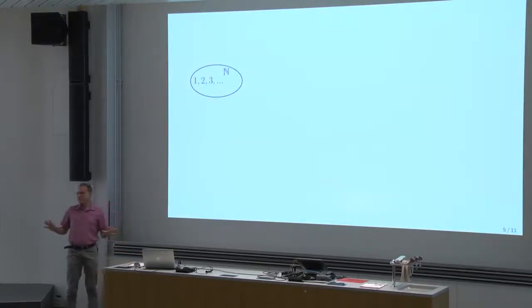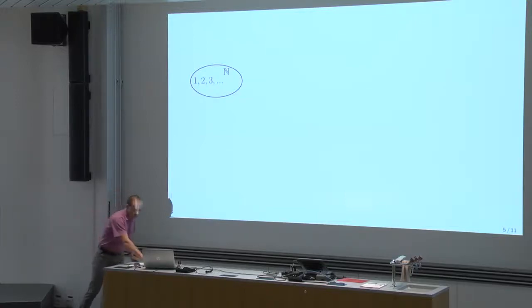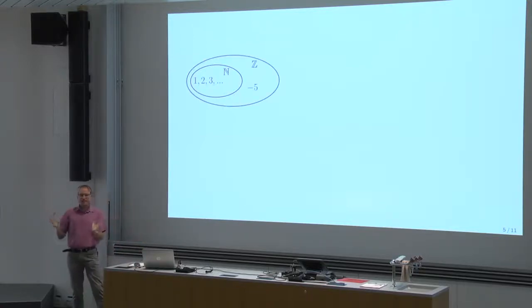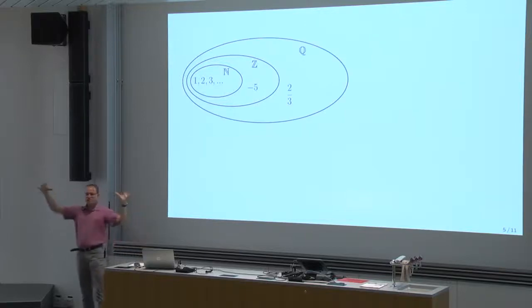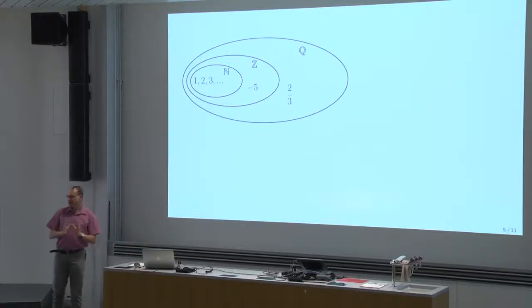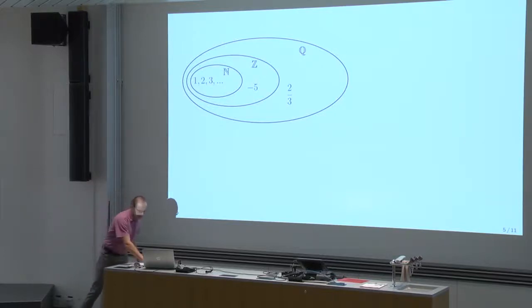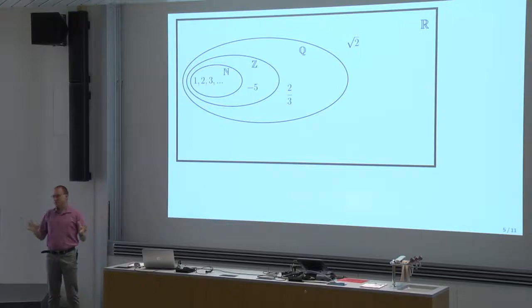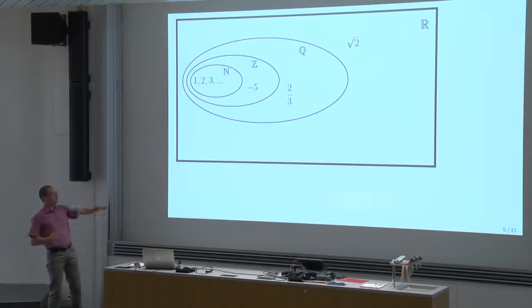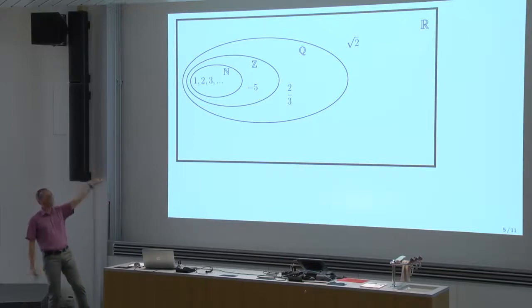Now let's wrap up. The positive integers are contained in the set of integers. There are integers that are not positive integers, like minus 5. A larger set of numbers is the set of rational numbers — 2 thirds is a rational number which is not an integer. And all of them are inside the set of real numbers. For us, this will be the largest box today, the set of real numbers.